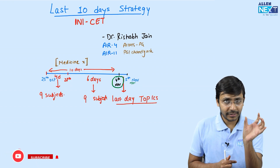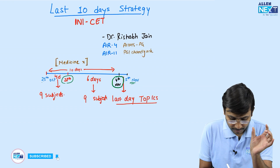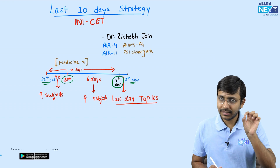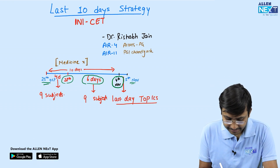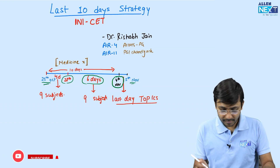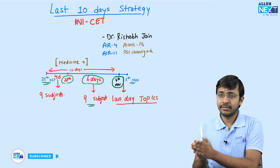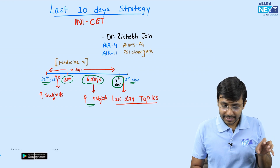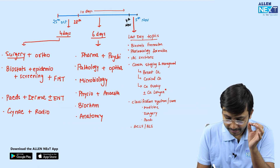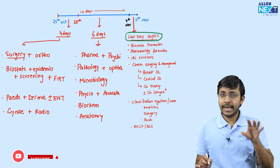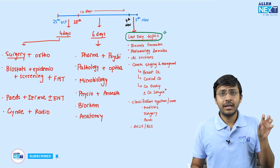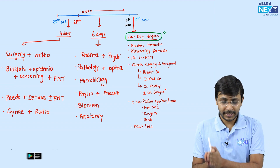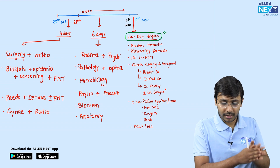In the first four days — 25th to 28th October — we'll try to cover eight to nine subjects. In the next six days — 29th October to 3rd November — we'll do another nine subjects, majorly from first and second year. Now let me start with the last-day topics, because these are very volatile topics that everybody forgets, and it's normal to forget them. On 4th November, just a day before the exam, you have to revise these.